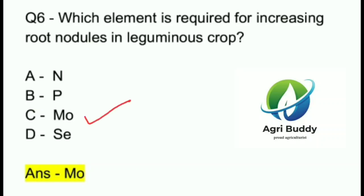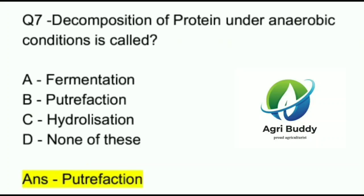Question 7. Decomposition of protein under anaerobic condition is called? A. Fermentation. B. Putrefaction. C. Hydrolysation. D. None of these. And the answer is Putrefaction.